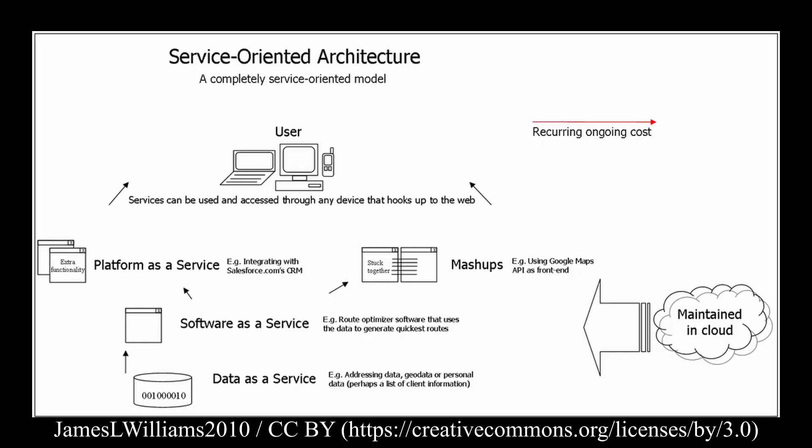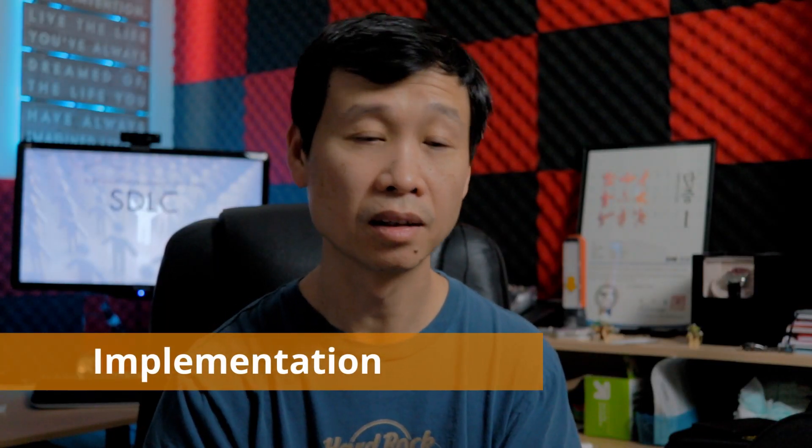In terms of design, we have to figure out all of this: the look and feel of the UI, the user interface, and how we process data — what the code looks like. There's design work that needs to happen here; this is where your architect sits. Then we get into the next phase, which is called implementation.